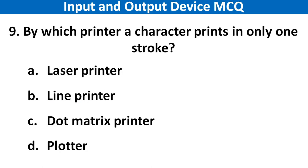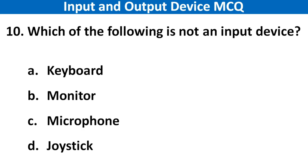Next question: By which printer does a character print in only one stroke? Right answer is option C: Dot matrix printer. Next question: Which of the following is not an input device? Right answer is option B: Monitor.